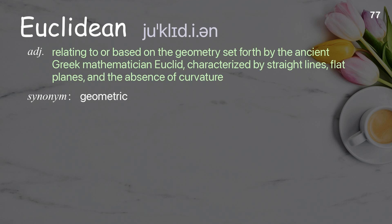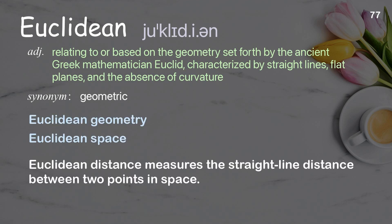Euclidean: Relating to or based on the geometry set forth by the ancient Greek mathematician Euclid, characterized by straight lines, flat planes, and the absence of curvature. Examples: Euclidean geometry, Euclidean space. Euclidean distance measures the straight line distance between two points in space.